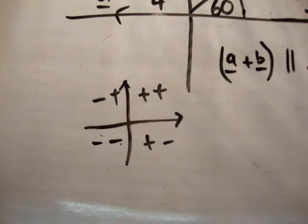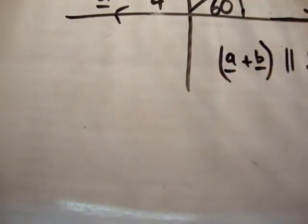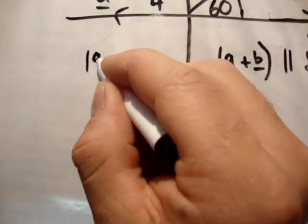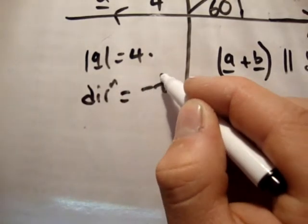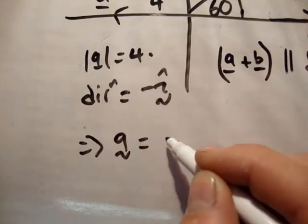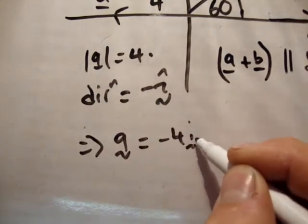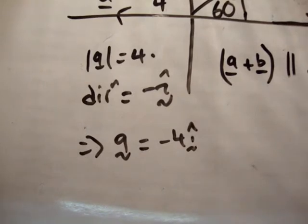All right. So now that we know that, we can begin to solve our problem. We notice straight away that the vector a is only in the x-axis, therefore its magnitude of a is equal to 4 units. Its direction is equal to minus i-hat. Therefore, the vector a is equal to minus 4 times i-hat. That's a.